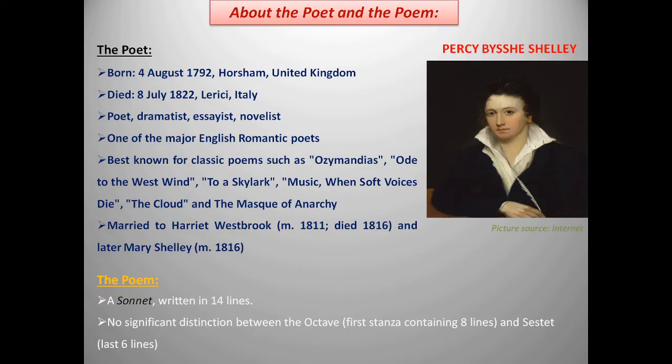Let's learn about the poet first. Percy Bysshe Shelley, also known as P.B. Shelley, was born on 4th August 1792 at Horsham, United Kingdom, and died on 8th July 1822 at Lerici, Italy. He was a poet, a dramatist, an essayist, and a novelist, and was one of the major English Romantic poets. He was best known for classic poems such as Ozymandias, Ode to the West Wind, To a Skylark, and so on.